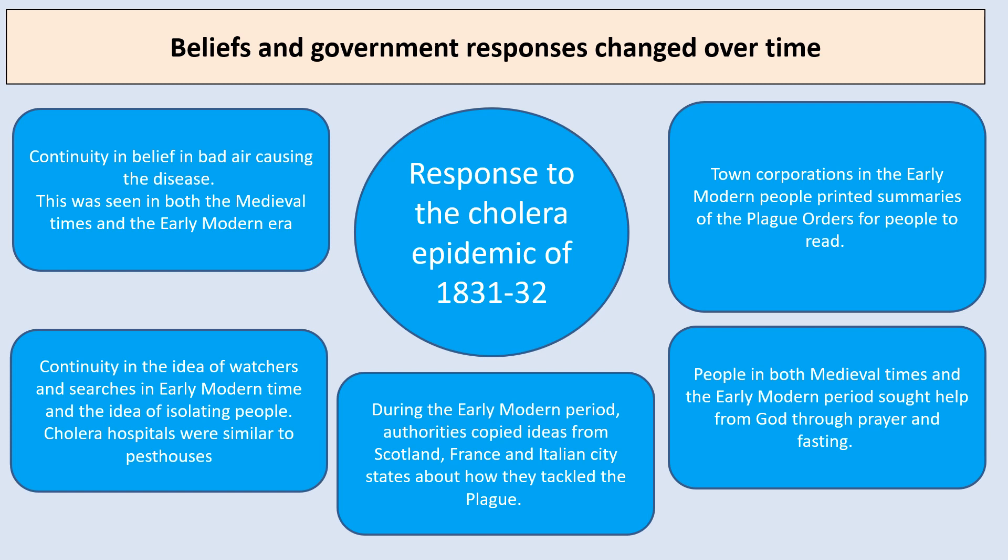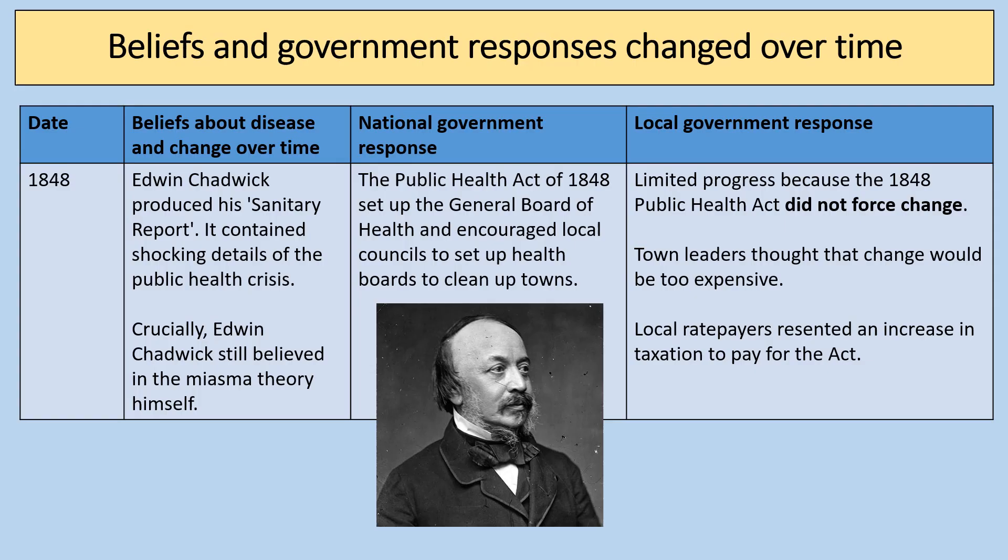In terms of continuities and change: there was continuity in the belief in bad air causing disease from medieval times; continuity in the idea of watches, searches and isolating people in cholera hospitals — similar to pest houses in the early modern era. Authorities copied ideas from Scotland, France and Italian city states about tackling the plague, similar to the government finding out about cholera in other countries. Town corporations printed summaries of plague orders, similar to attempts to map cholera outbreaks and give advice. In both the medieval and early modern period people sought help from God through prayer and fasting, and we can still see that with cholera.